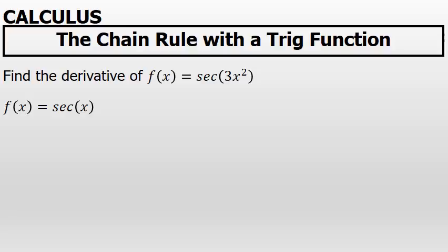If f of x was just equal to the secant of x, it is stated that the derivative of f of x is simply the secant of x times the tangent of x.